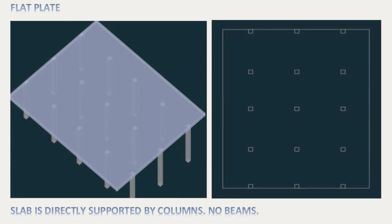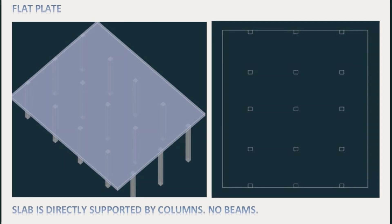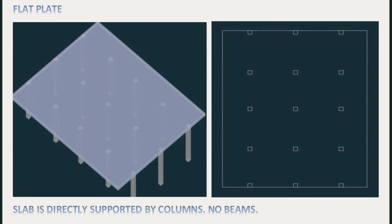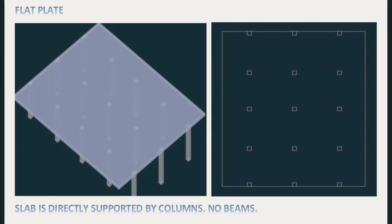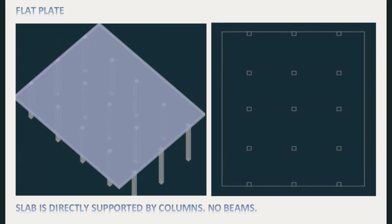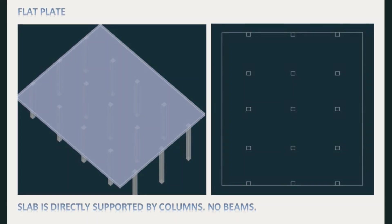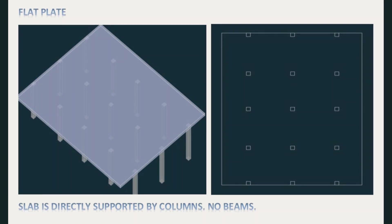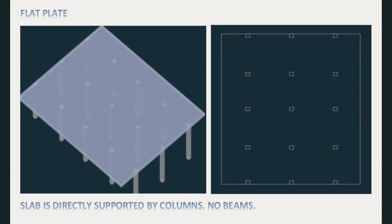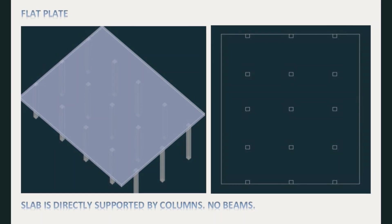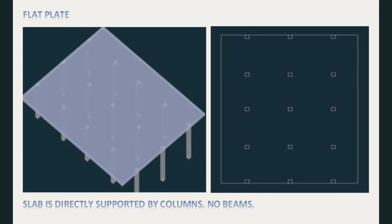The third type of slab is a flat plate. A flat plate is when there are no beams and the slab transfers loads directly to the nearby columns. A flat plate is an ideal case — structural engineers don't need to design for beams, architects love it because they have full headroom to play with and it's aesthetically better without beams. Mechanical and electrical engineers would love it too, as they can install cables and ductwork without worrying about punching through beams.